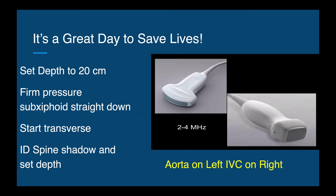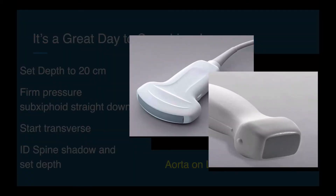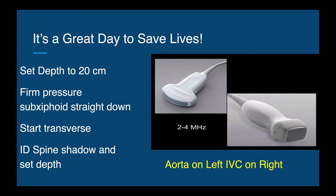We're going to use a curvilinear or phased array probe and set our depth to 20 centimeters. We will exert firm pressure just below the xiphoid and aim the probe directly perpendicular to the skin towards the back. We will start out transverse with the marker dot to the patient's right side and identify the spine shadow as the deepest structure, setting our depth one centimeter deep to the spine shadow. On the left we will see the aorta; on the right, the inferior vena cava.